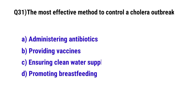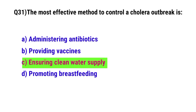Question number thirty-one: The most effective method to control a cholera outbreak. The correct option is C, ensuring clean water supply.